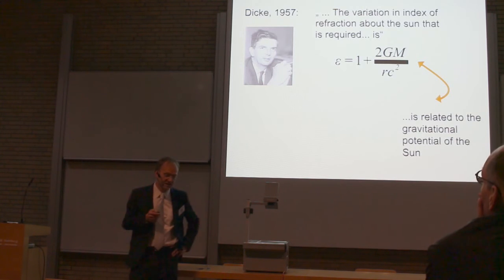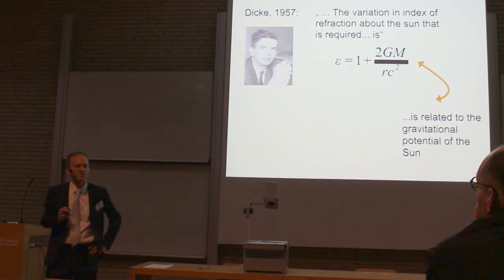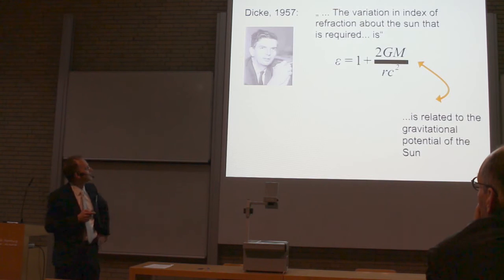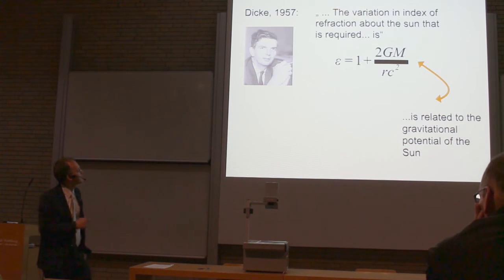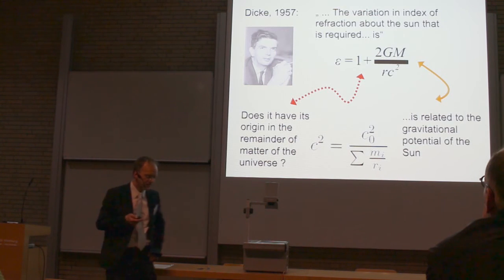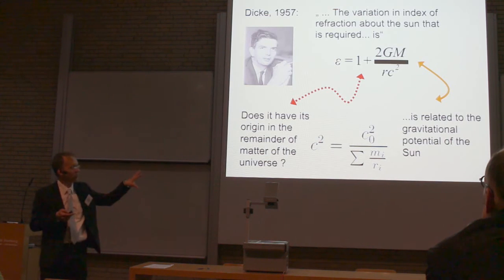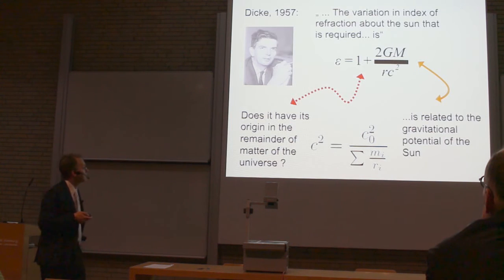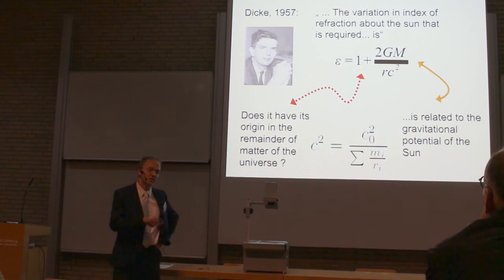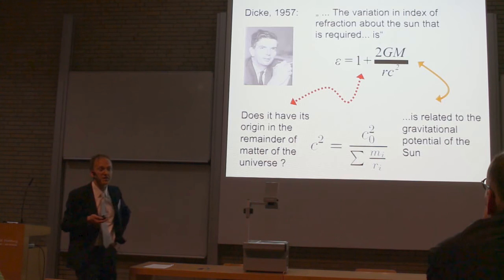That was one big insight Dicke had. The second was that this cosmology could satisfy Mach's principle. He asked: the right-hand side relates to the gravitational potential of the Sun — but what about the number one on the left side? Does it have its origin in the remainder of matter in the universe? That's a beautiful idea, because it would relate the variable speed of light version of general relativity to Mach's cosmology, in which you can calculate the gravitational constant from the distribution of masses. This would also relate to ideas by Schrödinger and Schama.